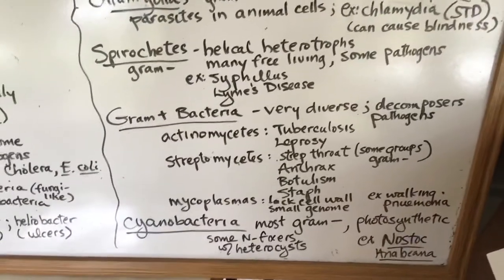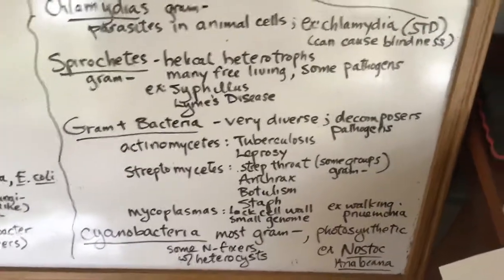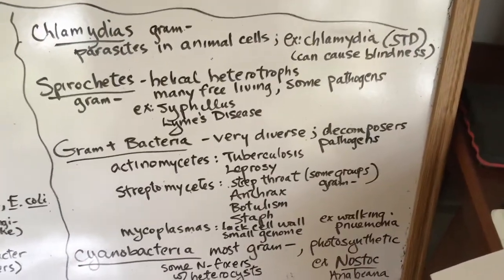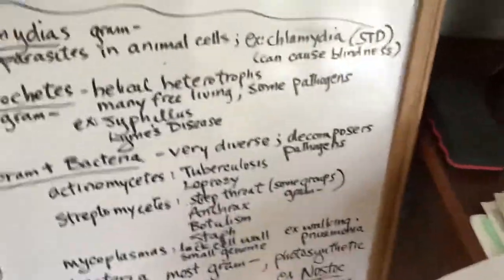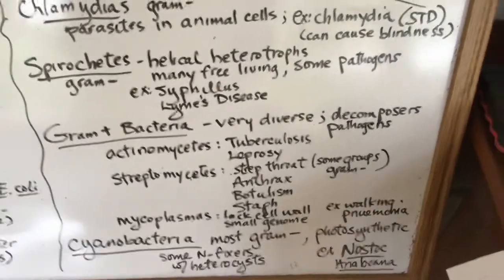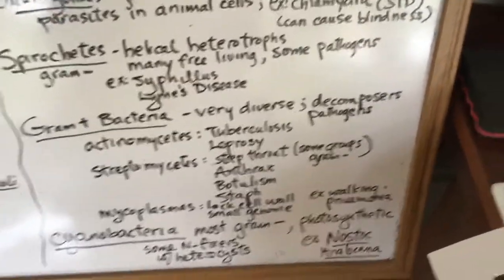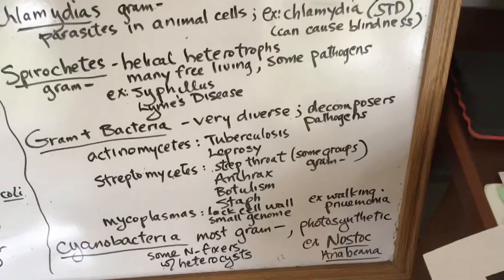There's a group that they call Actinomycetes - tuberculosis is an example. There's a group called Streptomycetes - some examples are Strep throat, Anthrax, Botulism.